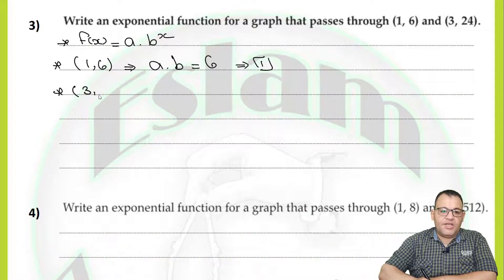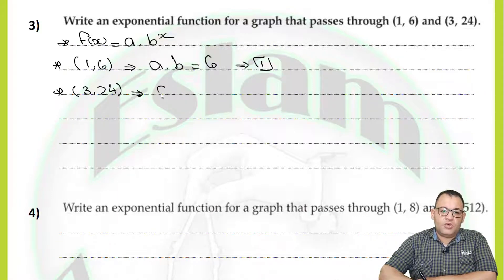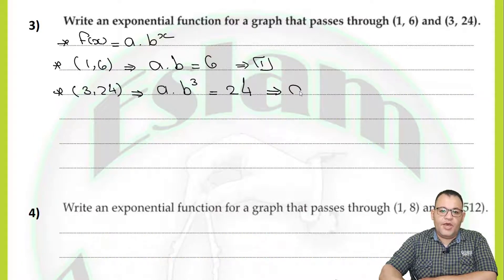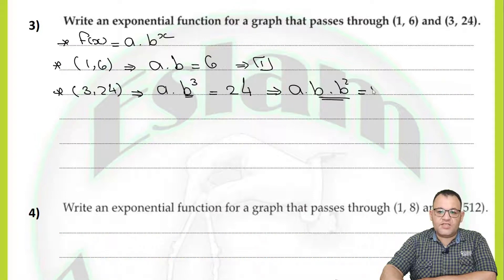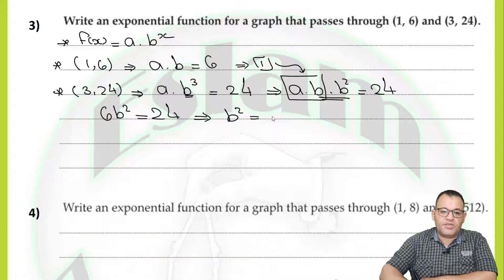From the second point (3, 24) — if you don't have the ordered pair which shows the y-intercept, we need to form two equations: the first using the first point, the second using the second point. For (3, 24), replace x with 3: a multiplied by b to the power 3 equals 24. Now, b to the power 3 equals b multiplied by b to the power 2, so it becomes a times b times b to the power 2 equals 24. From equation one, a times b equals 6, so 6 times b to the power 2 equals 24. Dividing by 6, b to the power 2 equals 4. By finding the square root, b equals 2.